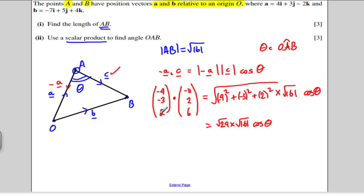So minus 4 times minus 11 is 44. I'm going to add minus 3 times 2 is minus 6, and I'm going to add 2 times 6, which is 12. Rearranging to make cos theta the subject, cos theta, it's going to be 44 minus 6 plus 12, which is 50, divided by the square root of 29 and the square root of 161. So the square root of 29 and the square root of 161. And if I work that out...